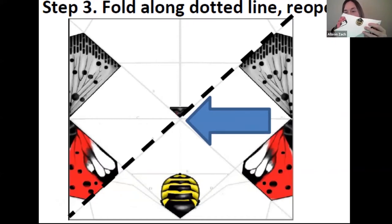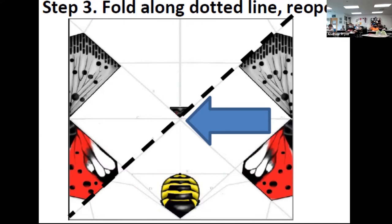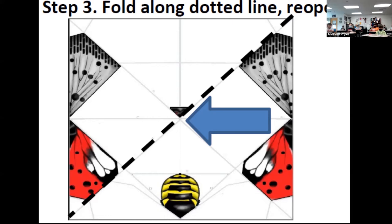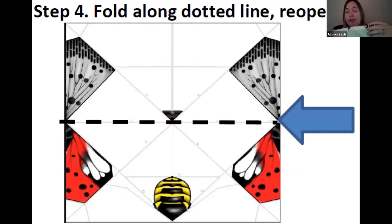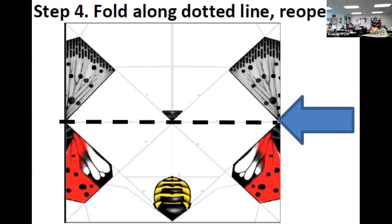We're going to do the exact same fold but on the other side, so you fold it the opposite way corner to corner. Then open it all back up, and fold the whole thing in half. Notice the yellows on the bottom — line it up like the picture shown, with pictures on the outside.